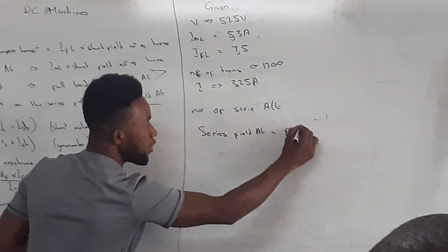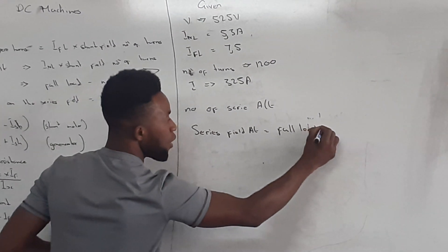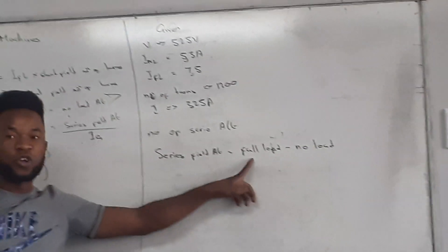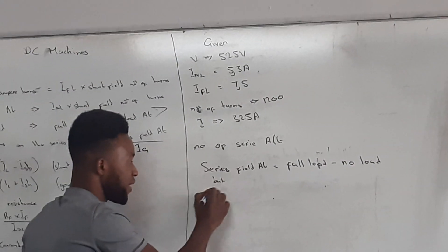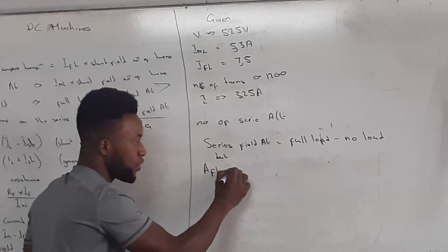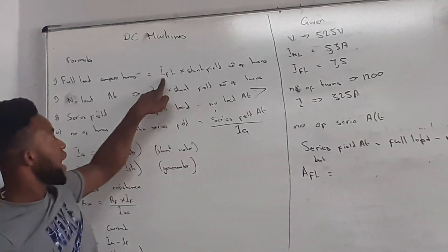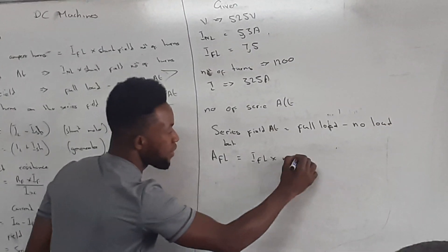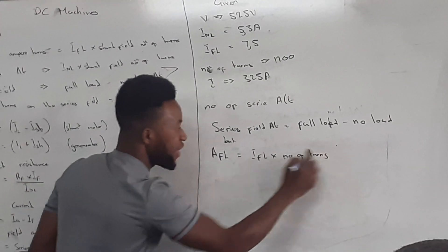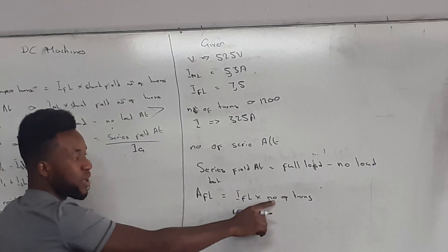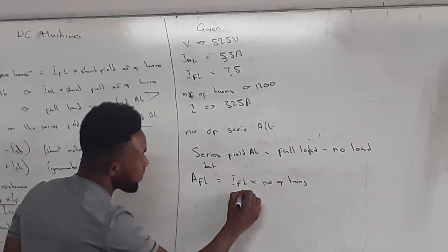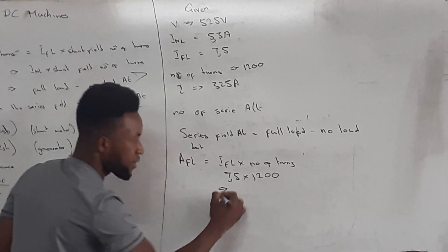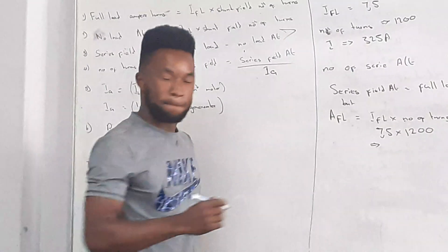To calculate AT_full_load, we use: I_full_load multiplied by the number of turns. We are given I_full_load = 7.5 amps and number of turns = 1,200. So AT_full_load = 7.5 × 1,200 = 9,000.